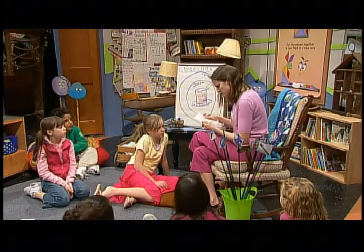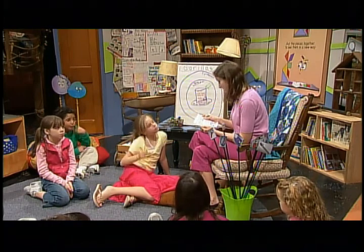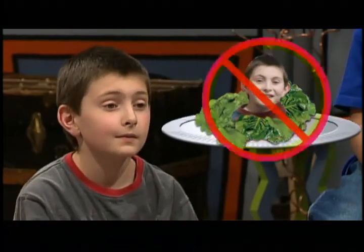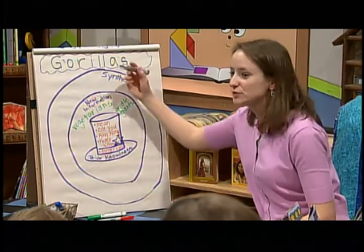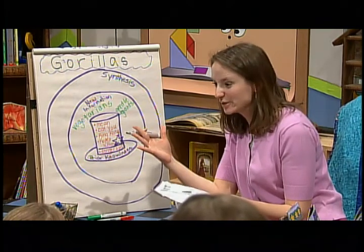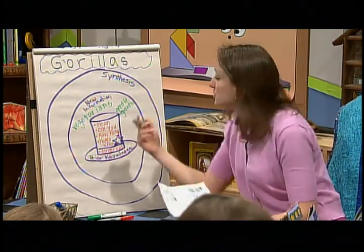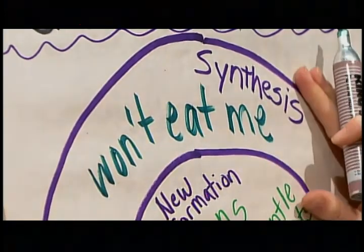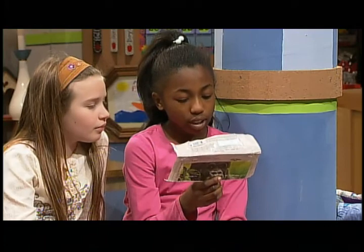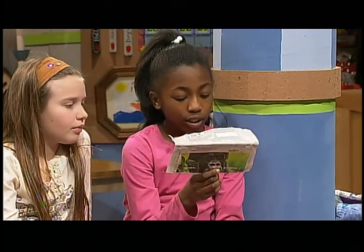Let's see what else the wrapper says. Gorillas are vegetarians, and some eat up to 75 pounds of food each day. They're vegetarians — that means they probably wouldn't eat me. I can see your thinking about gorillas is changing. You're taking pieces from the text and putting it together to create a new idea. I'm going to write 'won't eat me' here. That's synthesizing. Gorillas have no natural enemies, yet these peaceful creatures are among our most endangered species. I think we need to write 'peaceful' inside the circle. Yeah, that's an important idea. I think I was wrong about gorillas.